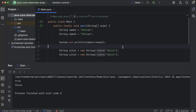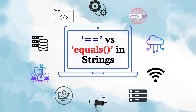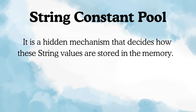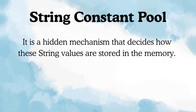The truth is, before we can understand the difference between equal to equal to and dot equals, we need to go one step deeper. This is not just about comparison operators — it's about how Java actually stores these strings in memory. So hello and welcome to my channel, The Curious Coder. In this video, I'm going to break down this entire concept from scratch, and by the end you'll have complete clarity on when to use equal to equal to and when to use dot equals.